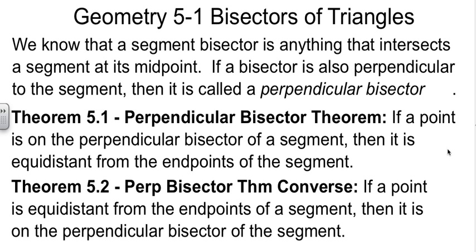5.2 is the converse of that. If the point is equidistant from the endpoints of the segment, then it's on the perpendicular bisector. And the two things go together to make one big statement, but we use them separately.